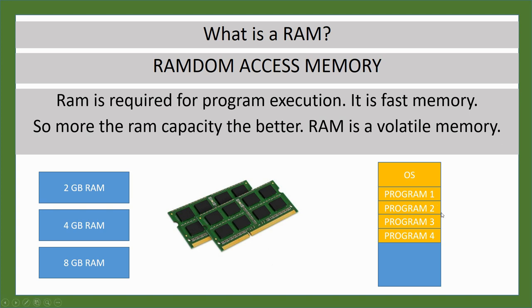Every program you run gets loaded onto RAM. For example, you might have a video game running, music playing in the background, and MS Excel or PowerPoint open at the same time — that is multitasking. The computer does multitasking pretty easily. These multiple programs are all running simultaneously, and in fact many other programs run in the background managed by the OS as well.